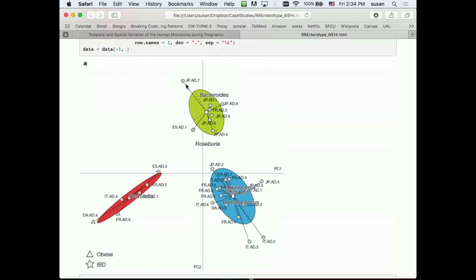And if you look carefully, you can see that these samples are labeled, so Japan, France, Japan. Japan is down here also with Italy and so on. And so the types are not actually geographically related.